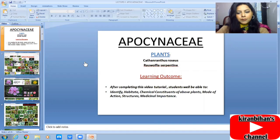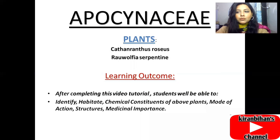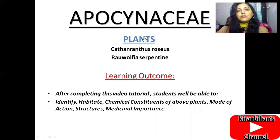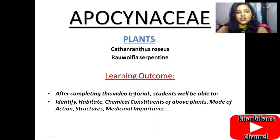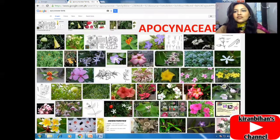Today's lecture is about the Apocynaceae family. We are going to discuss two main plants: Catharanthus roseus and Rauwolfia serpentina. By learning these two plants, after completing this video tutorial, students will be able to identify the habitat, chemical constituents, chemical structures, chemical nature, and medicinal importance of these plants.